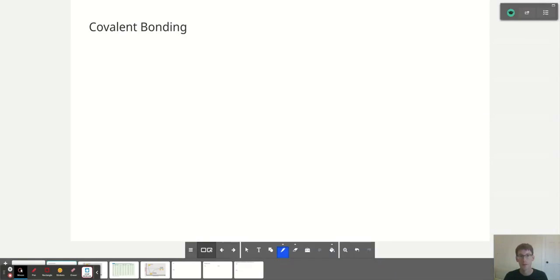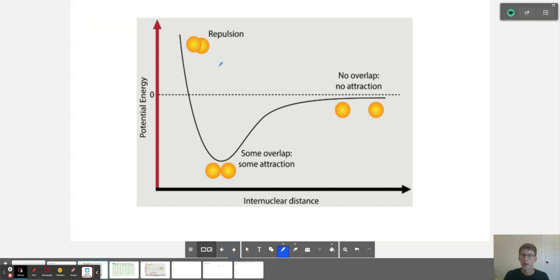In this video we're going to learn about covalent bonding. Covalent bonds are formed between two non-metals or a non-metal and a metalloid, and with covalent bonding there will be sharing of electrons.